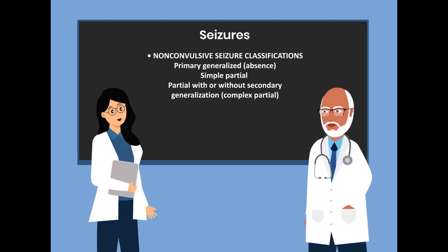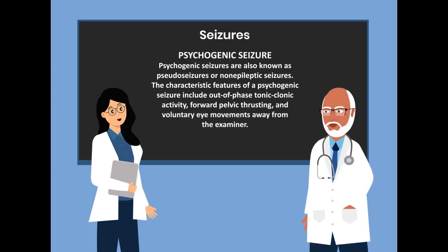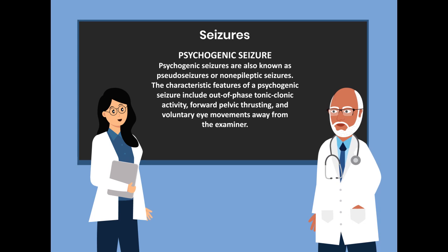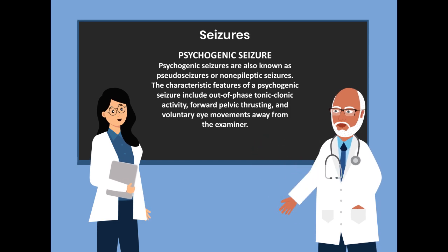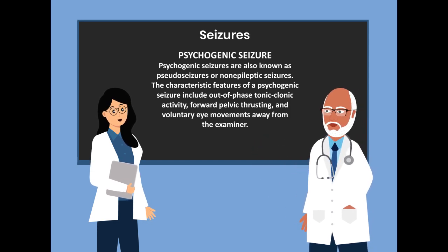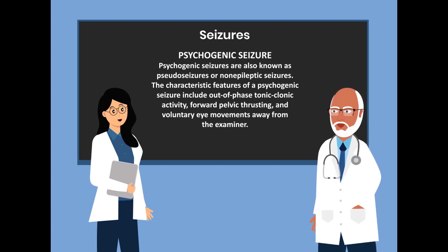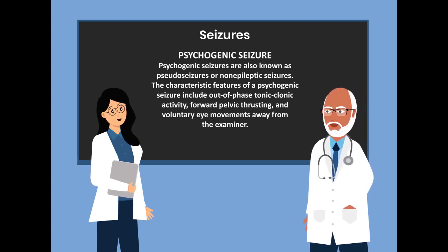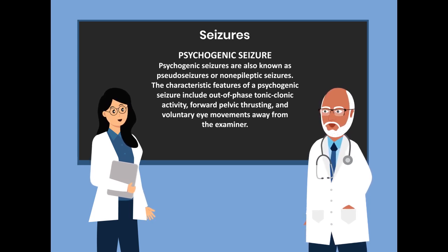Now, even though I previously stated that there are three classifications, I will include psychogenic seizures — not as a classification, but as a type of seizure that should be considered. Psychogenic seizures are also known as pseudoseizures or non-epileptic seizures. The characteristic features include out-of-phase tonic-clonic activity, forward pelvic thrusting, and voluntary eye movements away from the examiner.